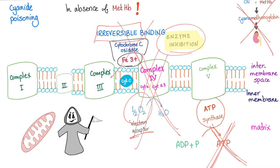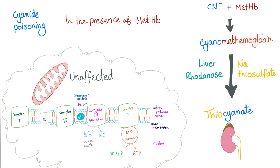When you are relatively lucky and have methemoglobin, it will bind cyanide forming cyanomethemoglobin. Thanks to rhodanese and sodium thiosulfate, we end up with thiocyanate, which contains cyanide, and it will be excreted in the urine.